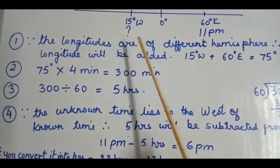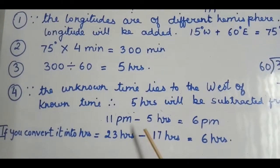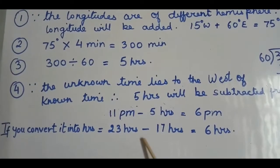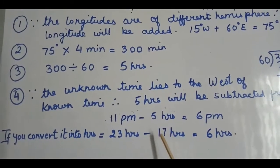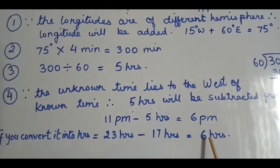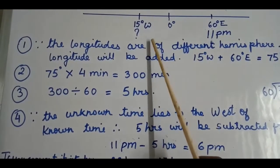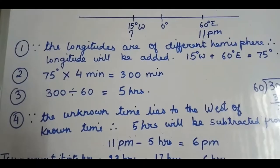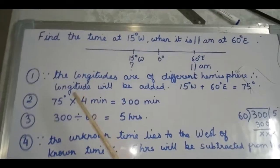The time at 15 degrees west is 6 PM. You can also verify this using 24-hour format: 23 hours minus 5 hours gives 18 hours, which is 6 PM — the same answer. This is how the time of a place lying in the western part of the known time is calculated.